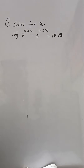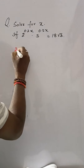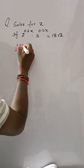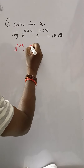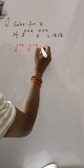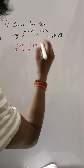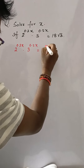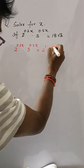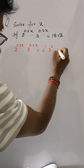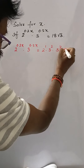Solve for x if 2 to the power 0.2x into 3 to the power 0.5x is equal to 18 under root 3. Here, 18 under root 3 is 2 to the power 1 into 3 to the power 2 into 3 to the power 1 half.